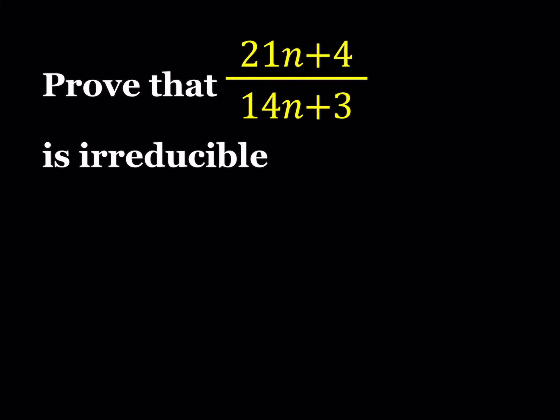We're supposed to prove that 21n plus 4 divided by 14n plus 3 is irreducible. Now what is that supposed to mean? We're going to talk about a couple things here, but first of all, let's test some values of n. We're talking about n being an integer, particularly some positive integers here.